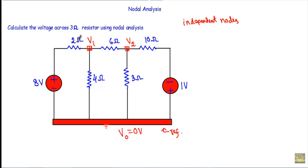At node number one we have the 2 ohm, 4 ohm, and 6 ohm resistors connected, but we don't have any current source. That means we don't have any known currents, so I will assume all the currents are unknown and outgoing from this node. The current through the 2 ohm is I1, through the 4 ohm is I2, and through the 6 ohm is I3.